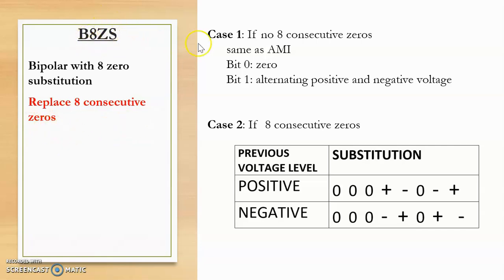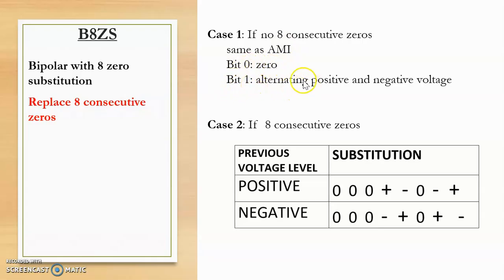To encode using B8ZS, we first check whether there are eight consecutive zeros or not. If there are no eight consecutive zeros, then it will be encoded the same as AMI — a bit zero is at zero voltage and a bit one alternates between positive and negative voltages. But if there are eight consecutive zeros, we must first check the previous voltage level.